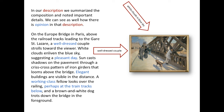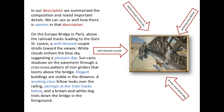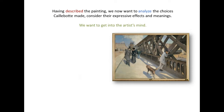Sun casts shadows on the pavement through a crisscross pattern of iron girders that looms above the bridge. Elegant buildings are visible in the distance. A working class fellow looks over the railing, perhaps at the train tracks below, and a brown and white dog trots down the bridge in the foreground. Having described the painting, we now want to analyze the choices Caillebotte made, consider their expressive effects and meanings.